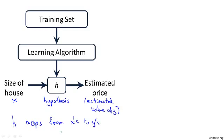People often ask me, why is this function called a hypothesis? Some of you may know the meaning of the term hypothesis from the dictionary or from science or whatever. It turns out that in machine learning, this is a name that was used in the early days of machine learning, and it kind of stuck. Maybe it's not a great name for this sort of function for mapping from sizes of houses to the predictions, but this is the standard terminology that people use in machine learning now. So don't worry too much about why people call it that.